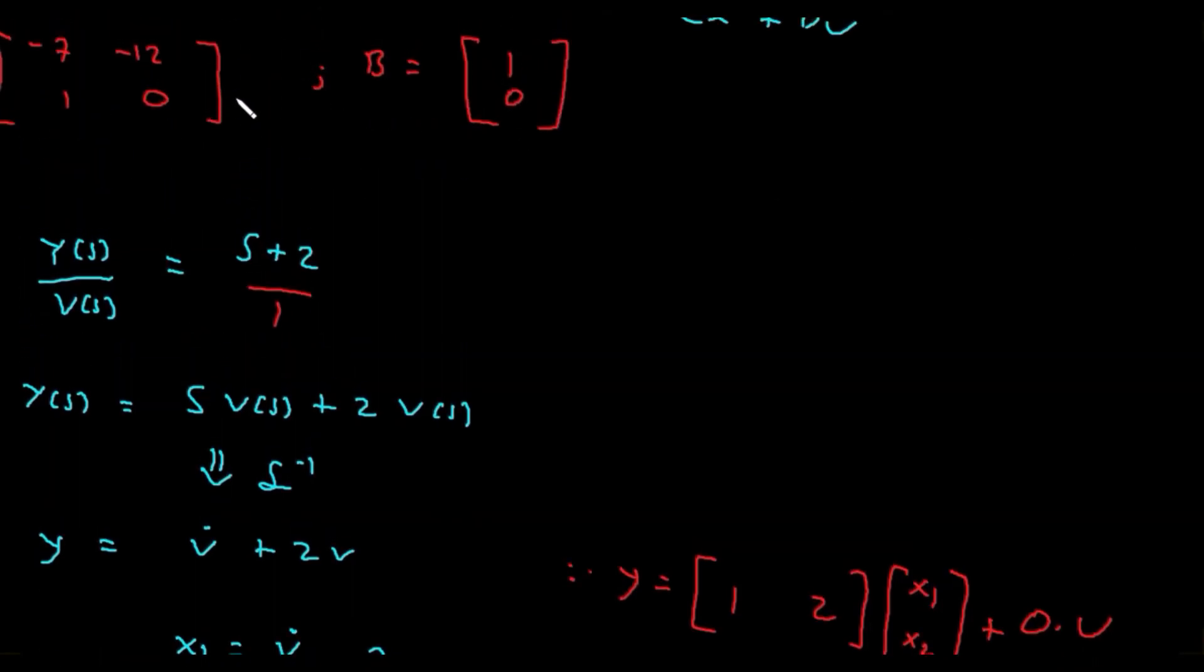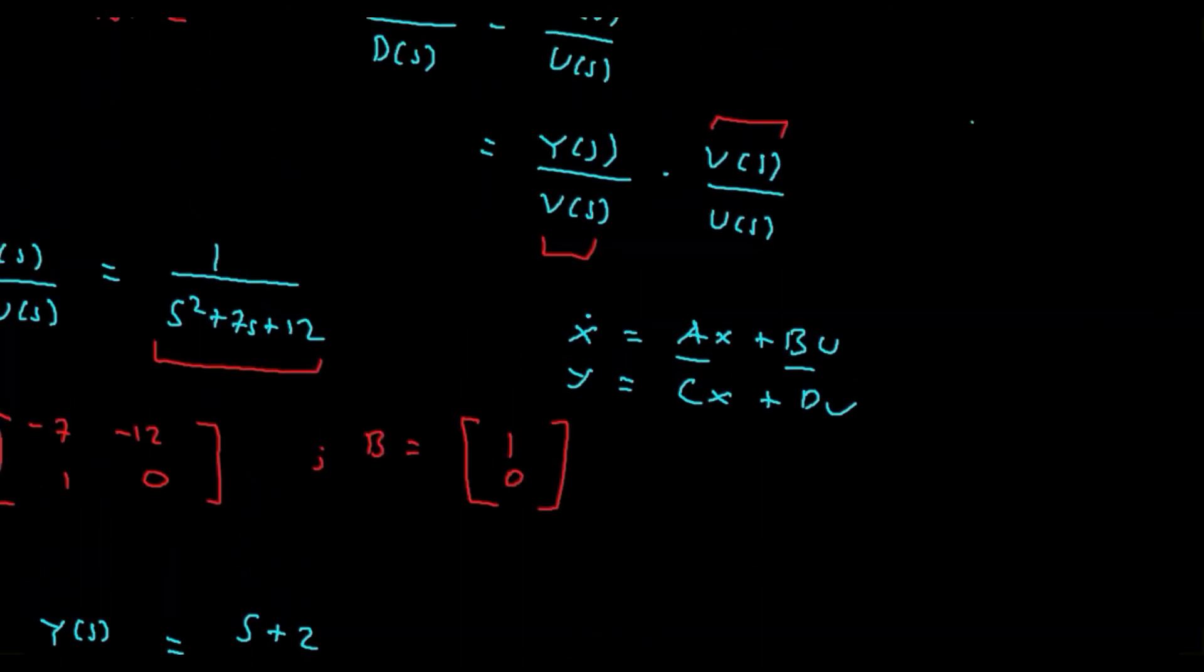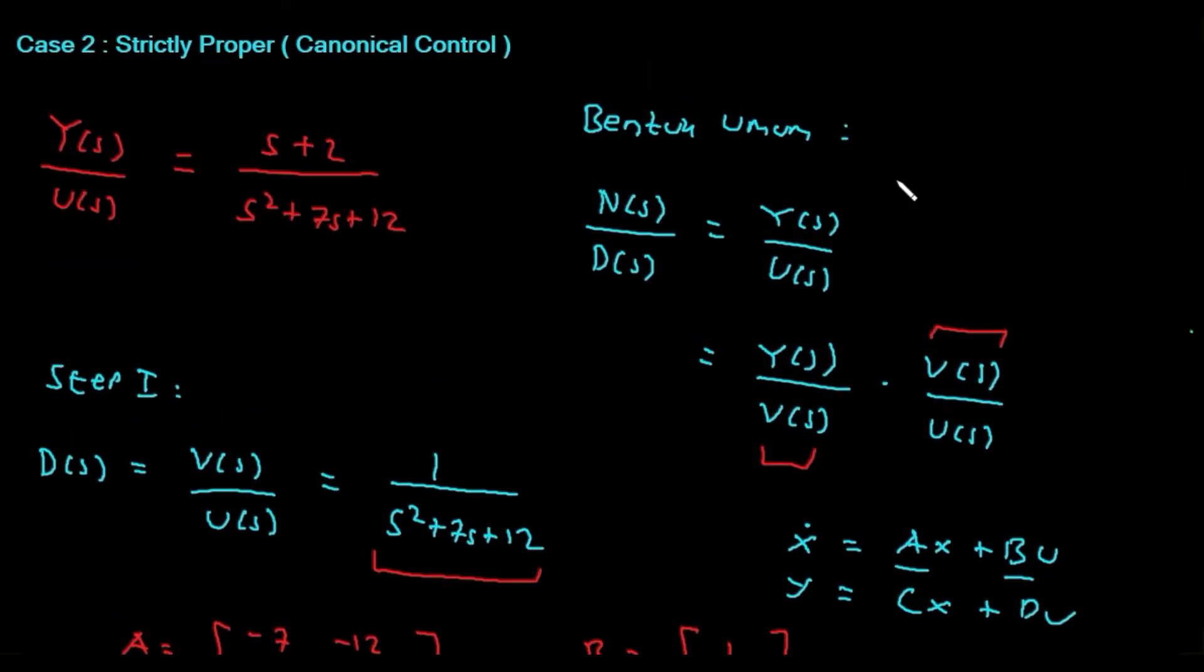If we collect the A and B values from above, we get x_dot = [-7, -12; 1, 0][x1; x2] + [1; 0]u and y = [1, 2][x1; x2] + 0·u. Complete! We have successfully converted the transfer function (s+2)/(s²+7s+12) into state space form.